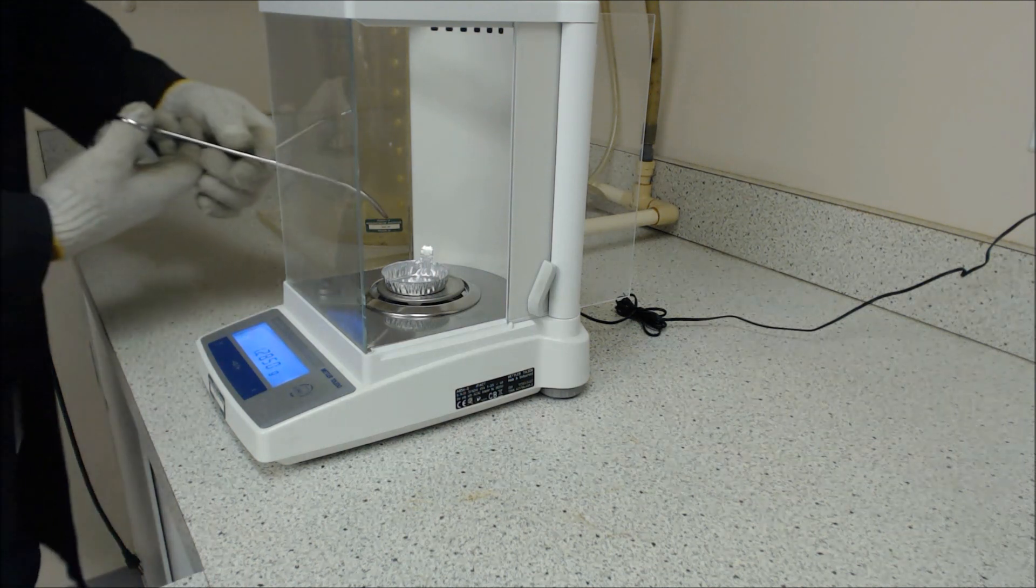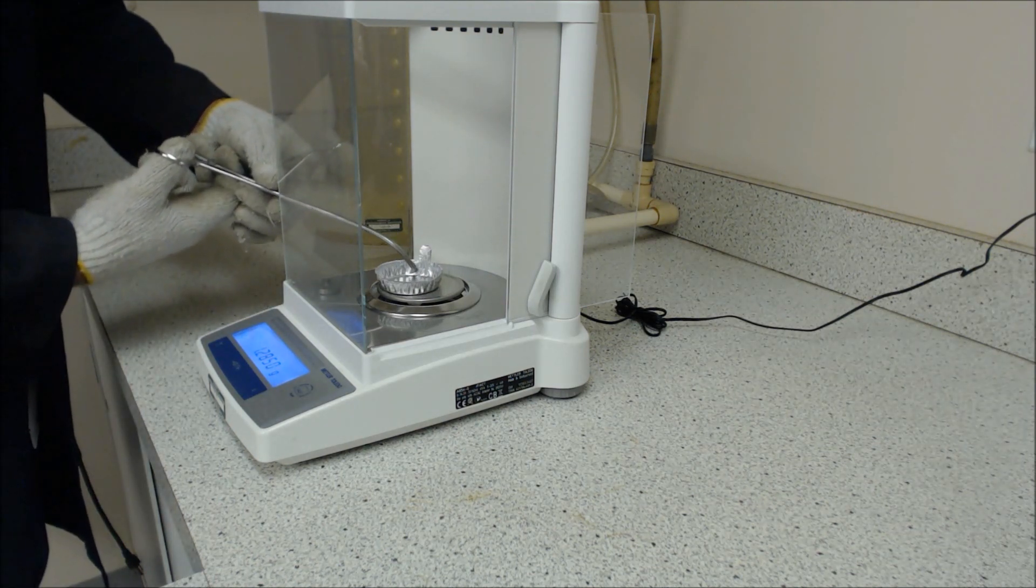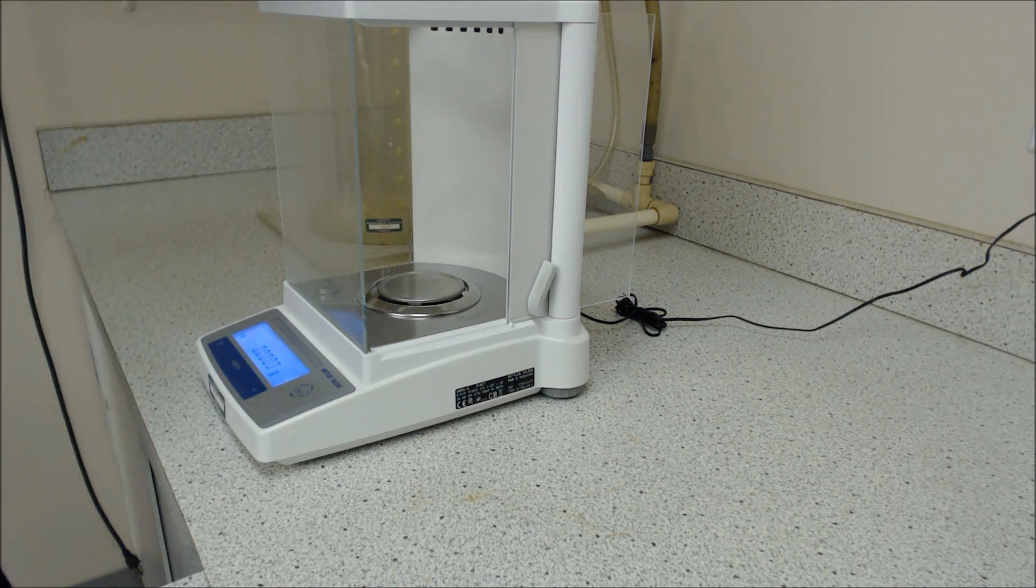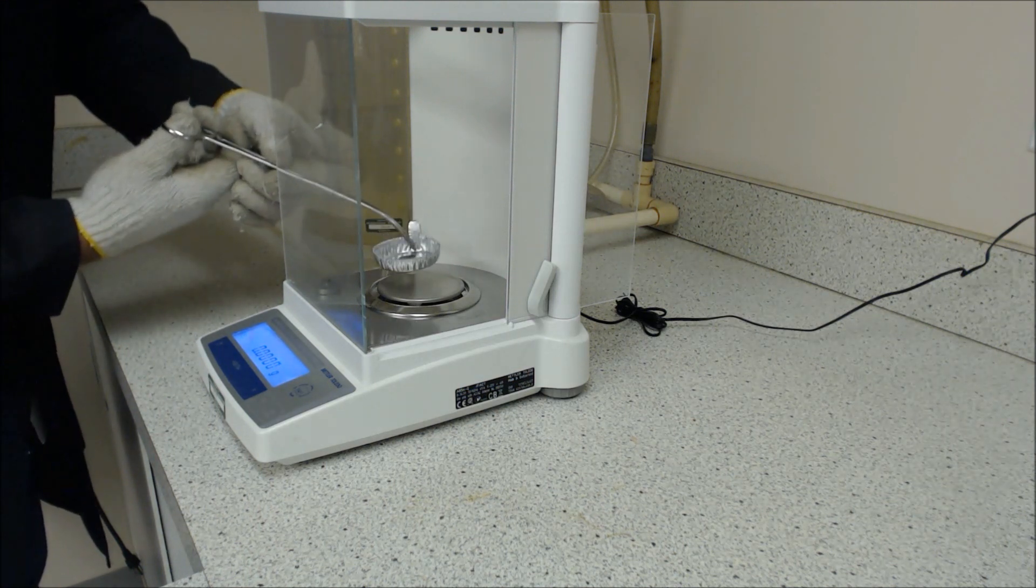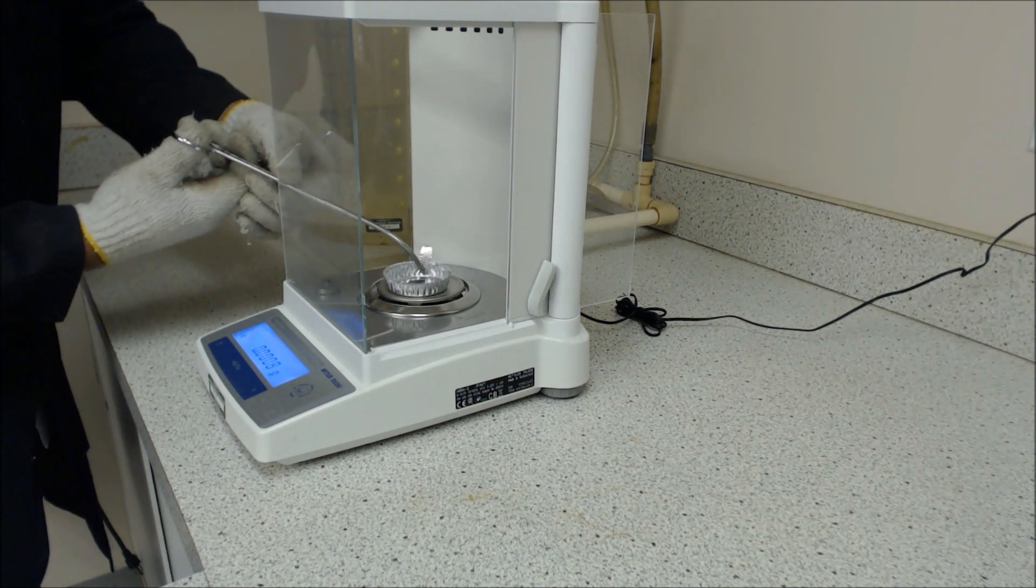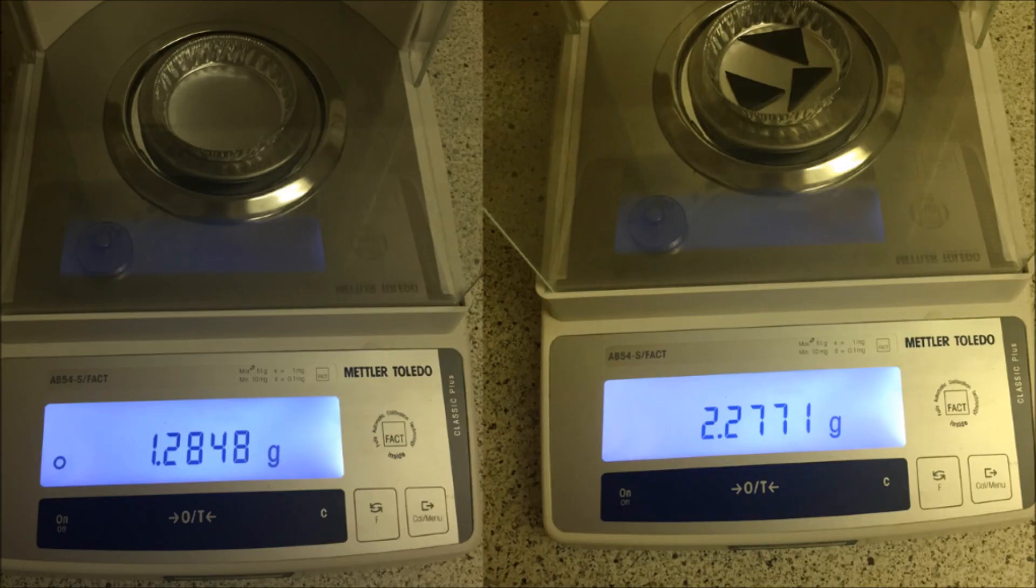Subsequent to that, we'd like a determination of the mass of the sample. We've added about one gram of the geomembrane, which is cut up into pieces, to the pan. Now getting the weight on the analytical balance.